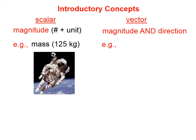A scalar quantity has a magnitude, which is a number with a unit. Mass is a scalar quantity. Temperature is a scalar quantity. There is simply a number with a unit associated with it.